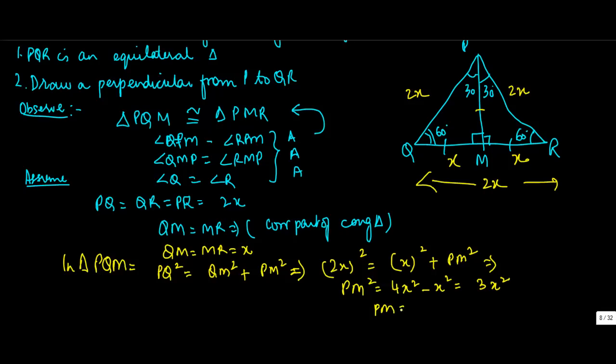Or PM is equal to under root 3X squared, root 3 into X. So this side comes to root 3 into X.